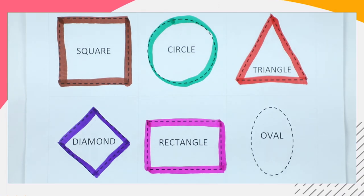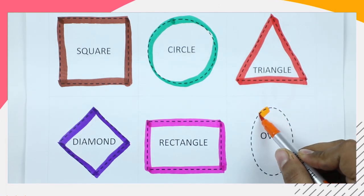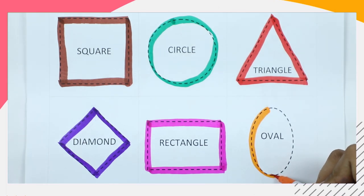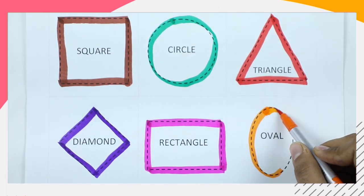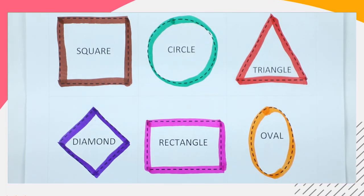Oval — we make an oval with orange color. It's an oval with orange color!